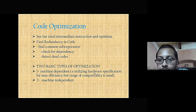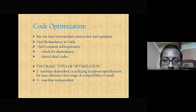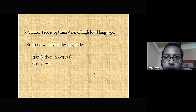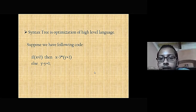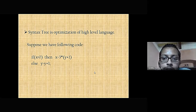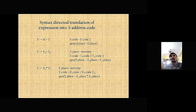In machine independent optimization, the range of compatibility is greater than the machine dependent one. For the syntax tree, it is optimization of high-level language. Suppose we have the following code: if x is less than zero then x equals three star y plus one, else y equals y plus one.